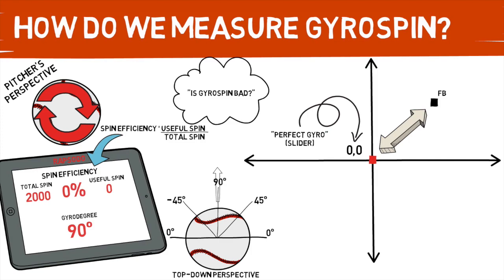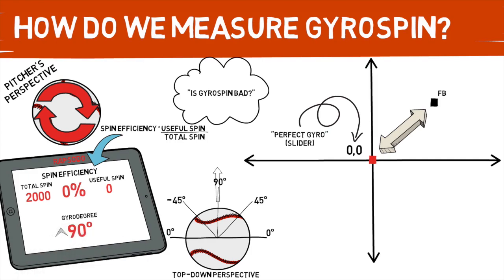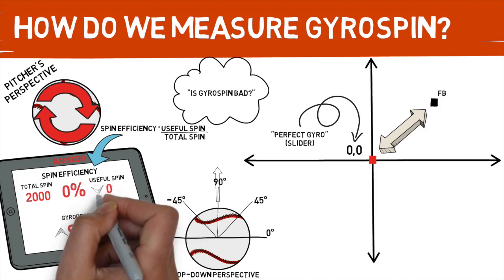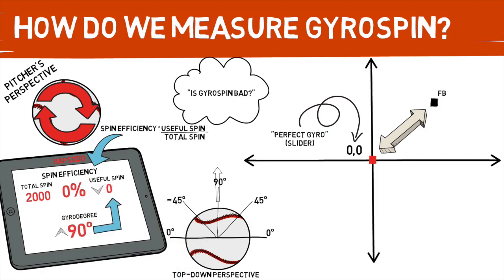Now that you understand gyro degree and useful spin are related — as your gyro degree goes up, your useful spin goes down. You can picture that a 45-degree gyro pitch is going to have about a 50% spin efficiency.